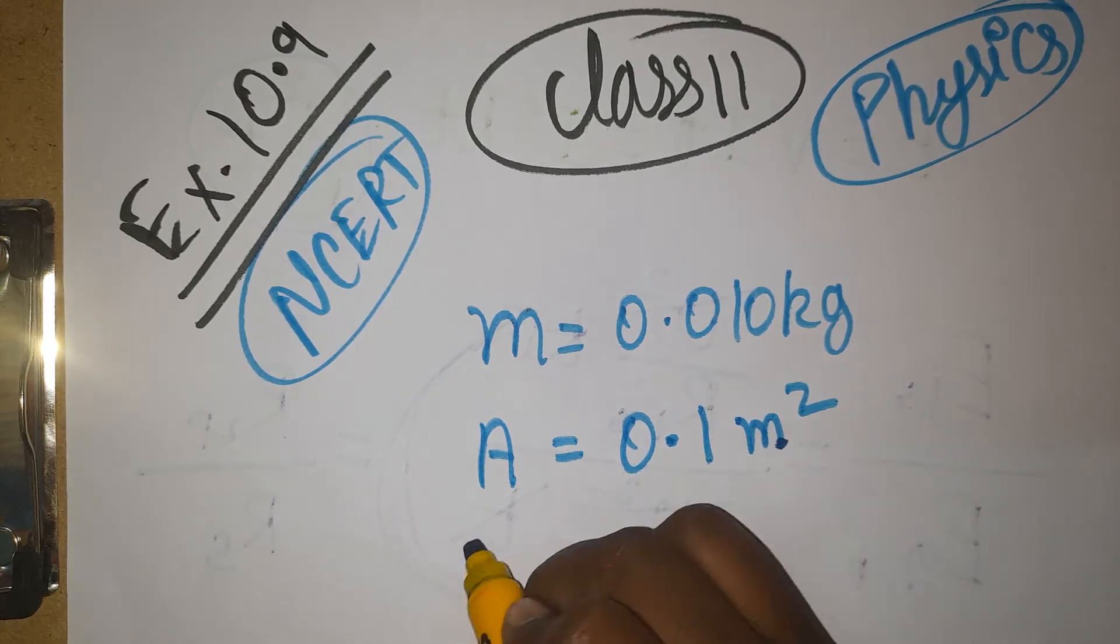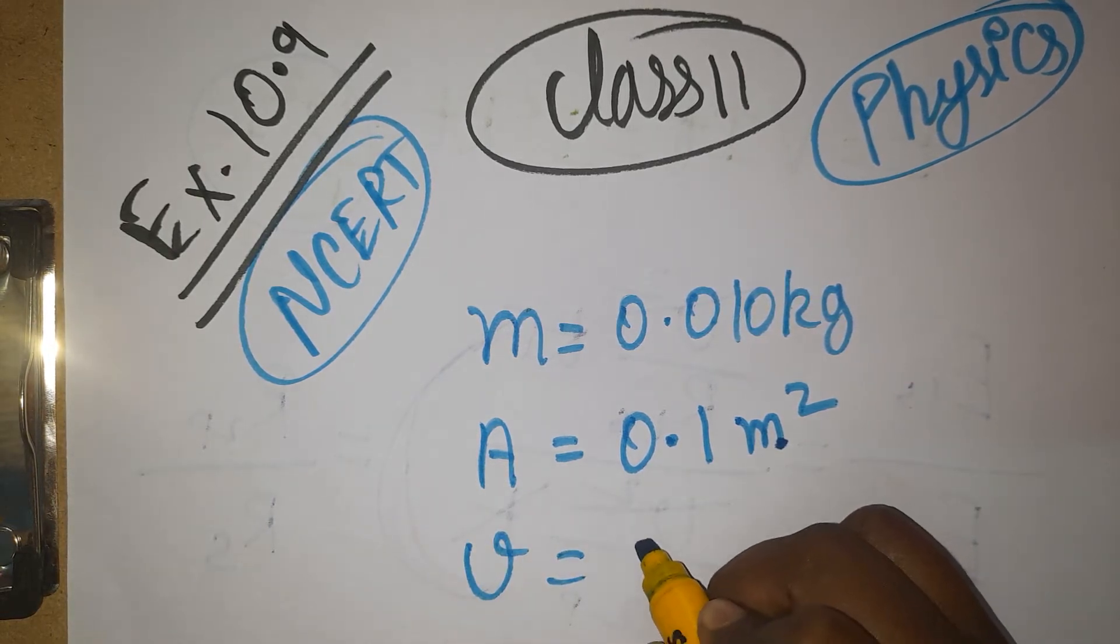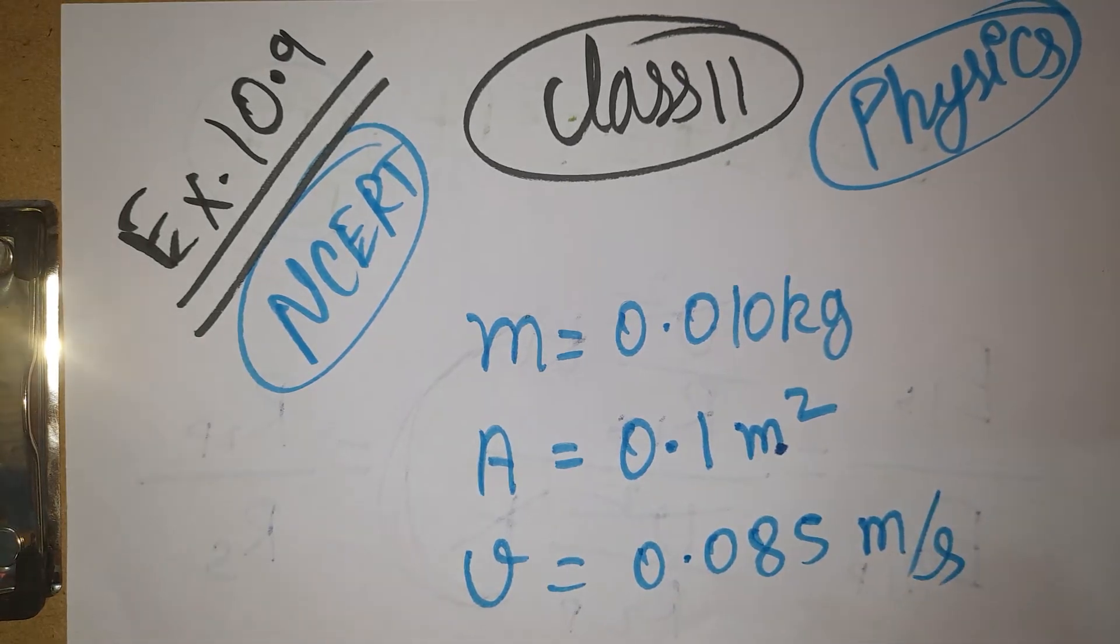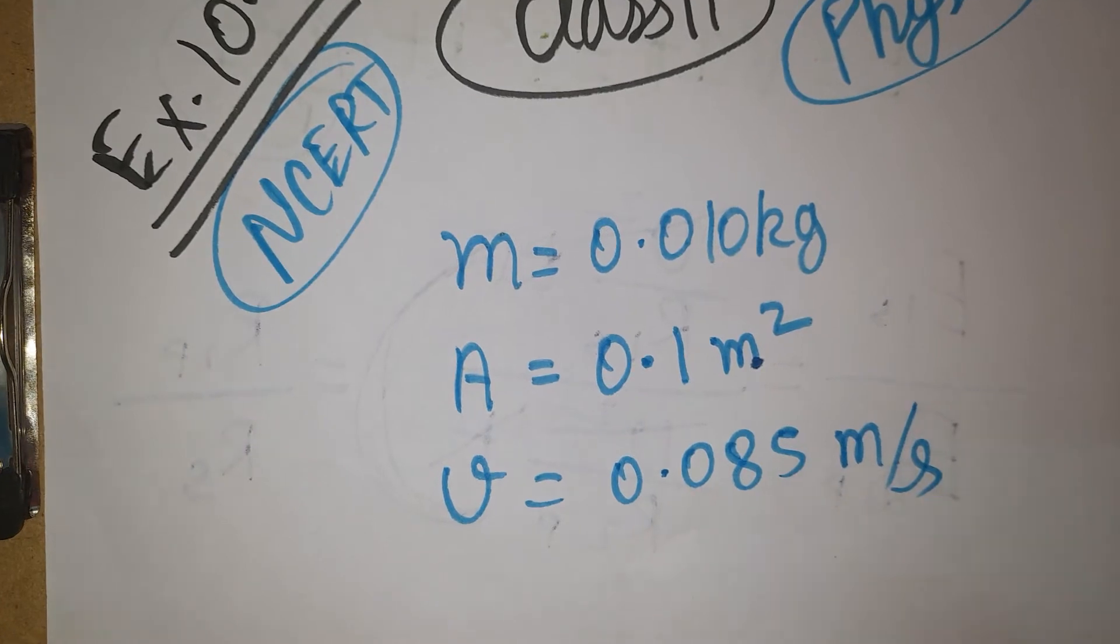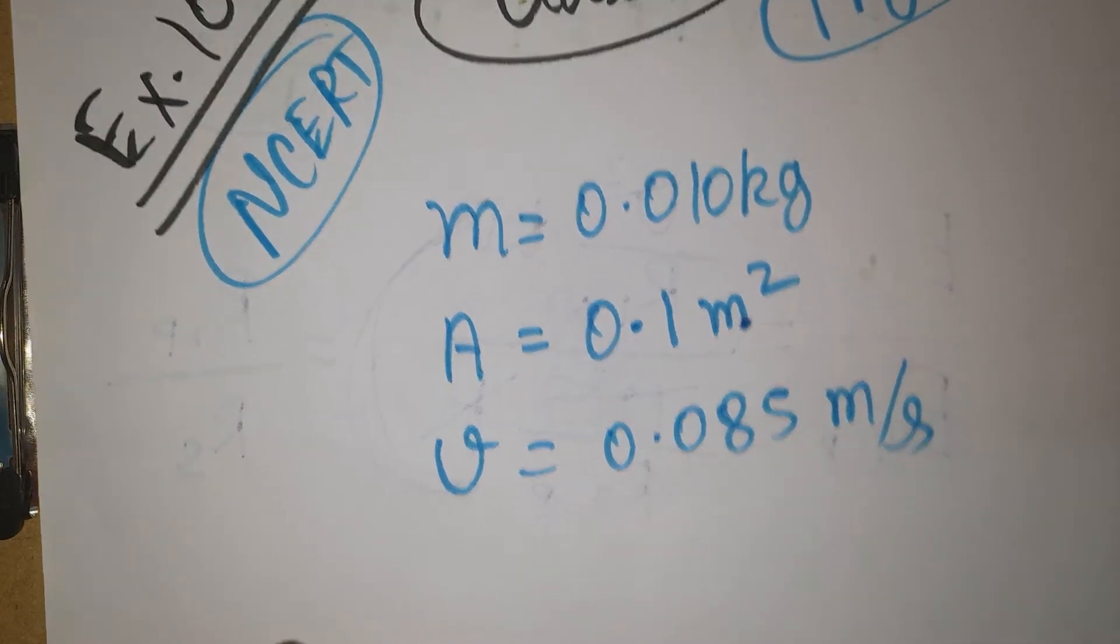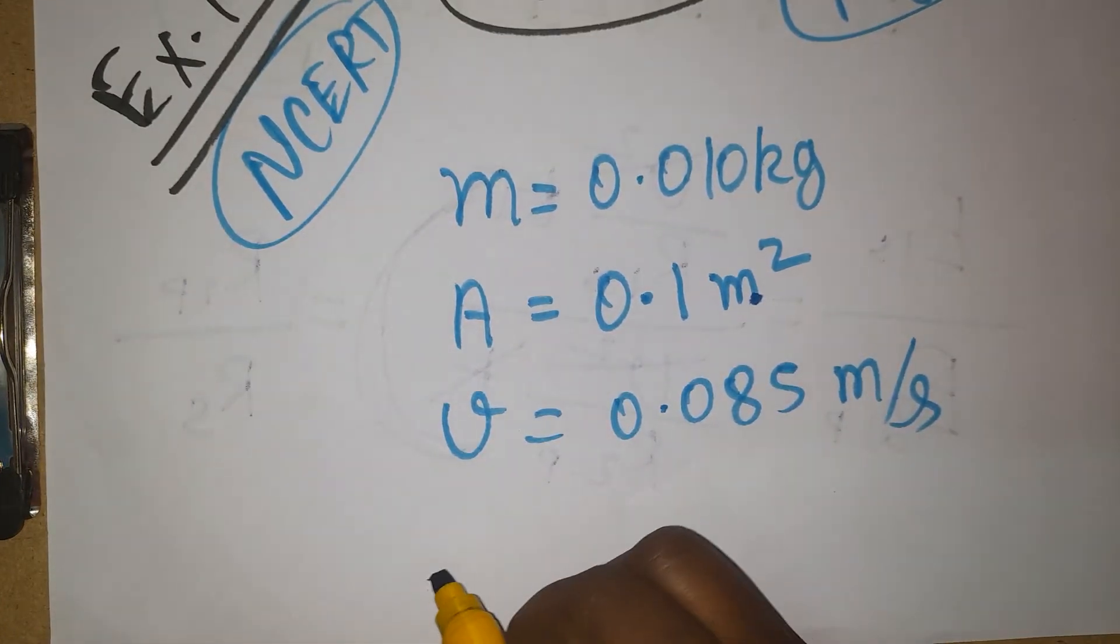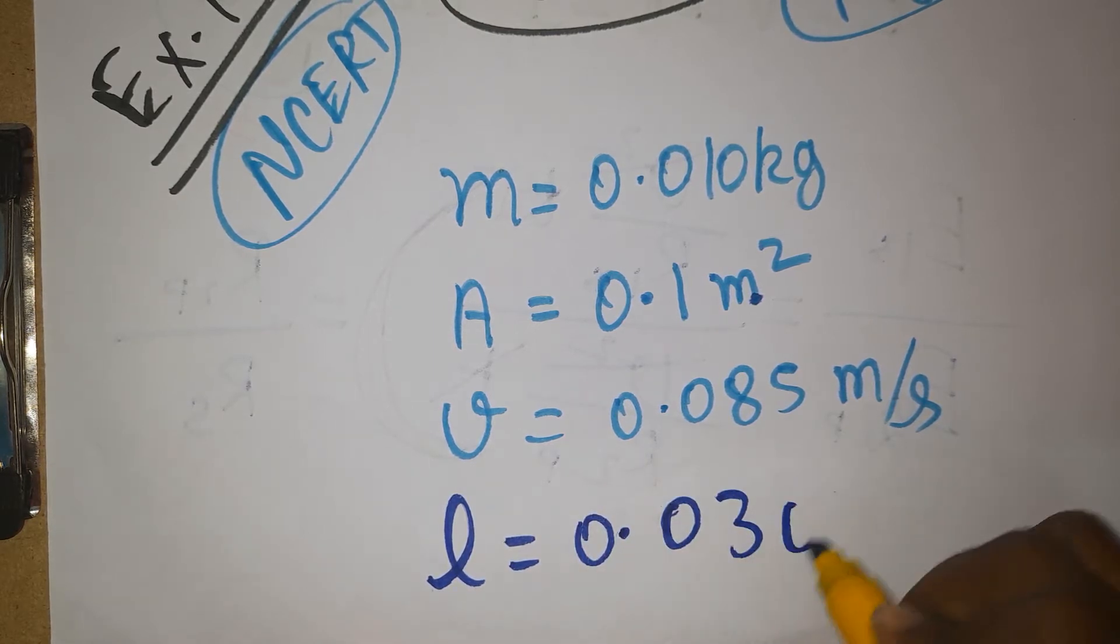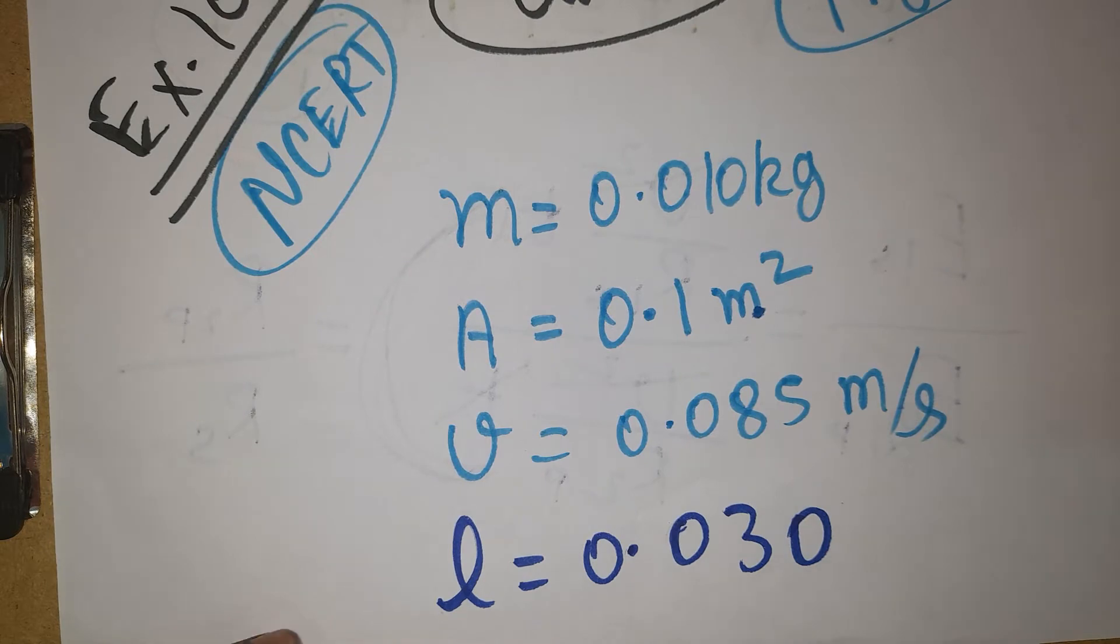Velocity is given as 0.085 meter per second. Then, thickness of the liquid is given as 0.03 mm. Now the coefficient of viscosity is the question mark.